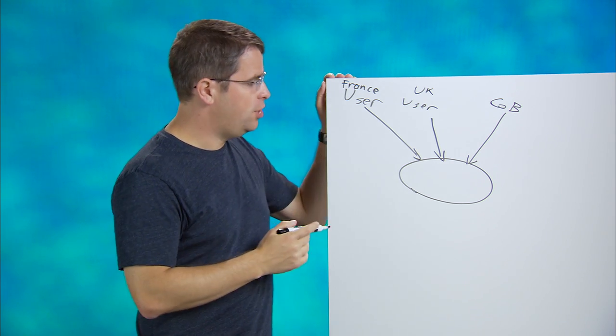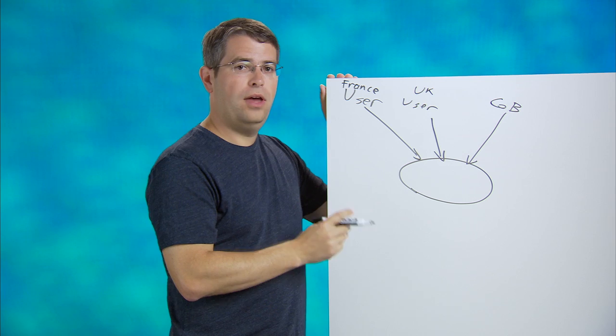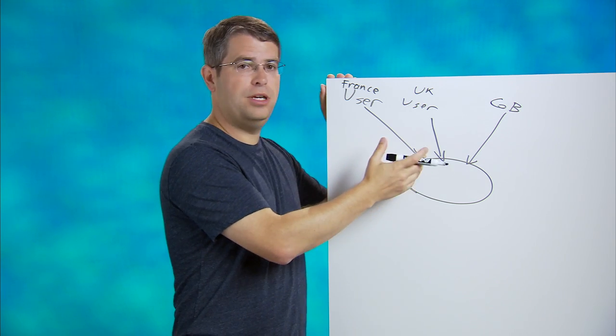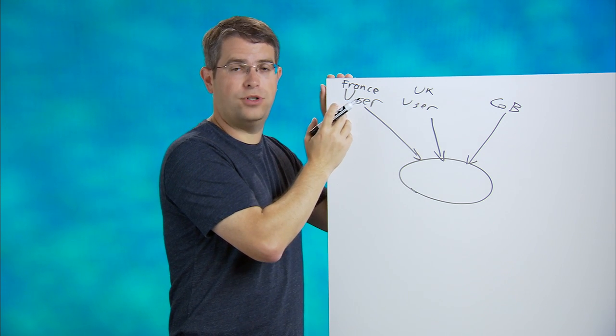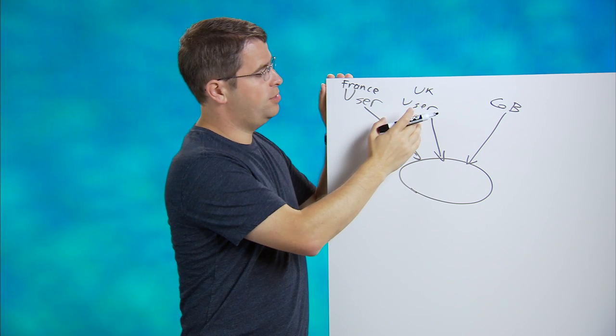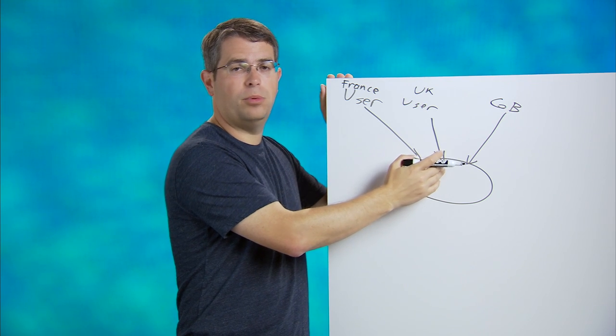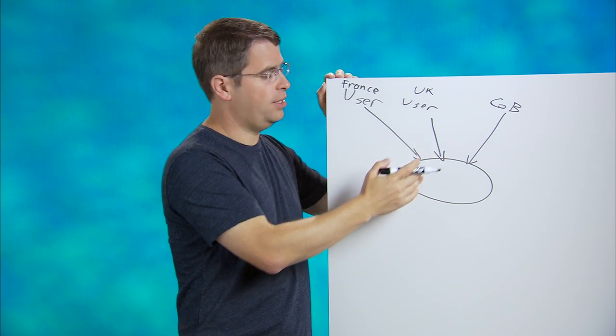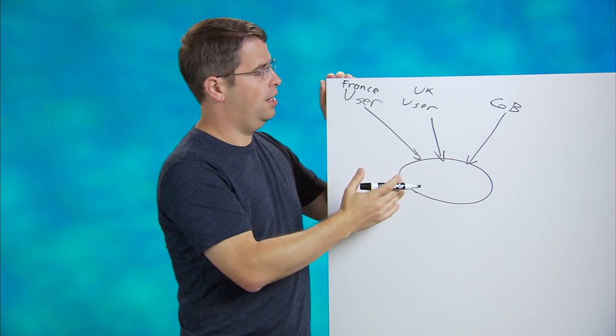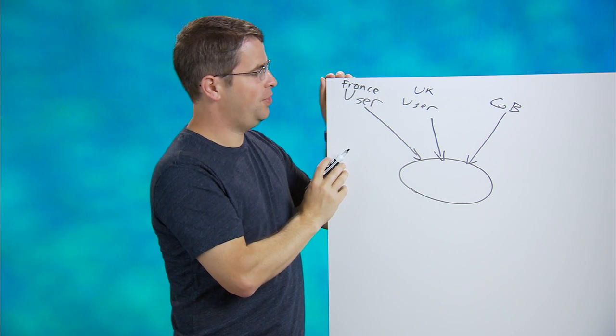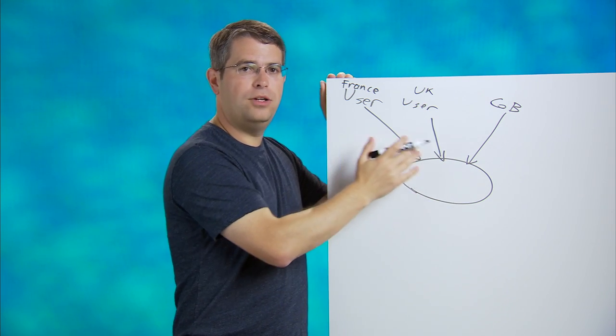So what geolocation does is whenever a request comes into the web server, you look at the IP address and you say, ah, this is a French IP address. I'm going to send them the French language version or send them to .fr version of my domain. If someone comes in and their browser language is English or their IP address is something from America or Canada, something like that, then you say, aha, English is probably the best message, unless they're coming from the French part of Canada, of course. So what that is doing is you're making the decision based on the IP address.